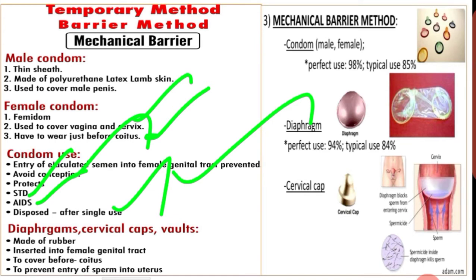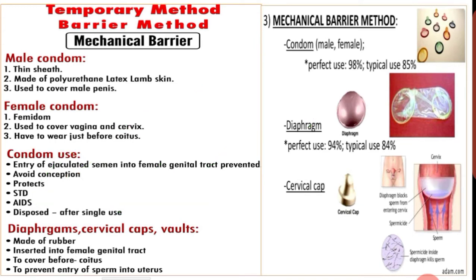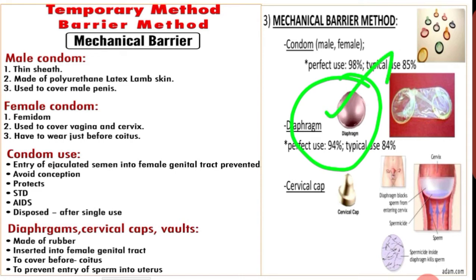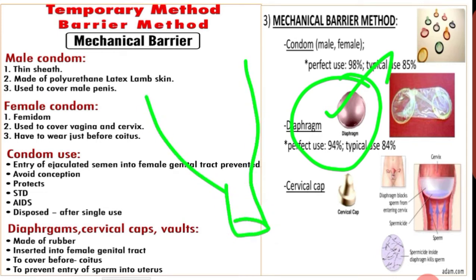Next is the diaphragm. The diaphragm is a dome-shaped rubber sheet with a flexible metal or spring ring at the margin, which is fitted inside the vagina to cover the cervix before sexual activity.